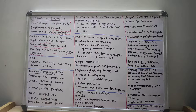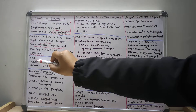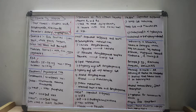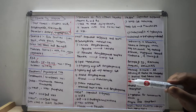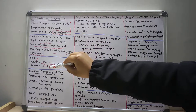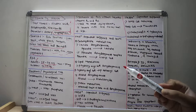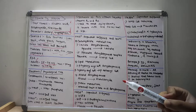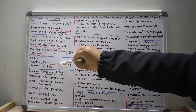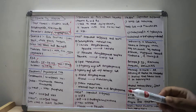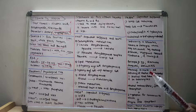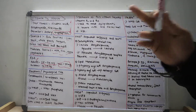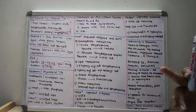The daily recommended allowance of vitamin B3 is 15 to 29 mg in adults and 10 to 15 mg in children. The maximum vitamin B3 we can take is 35 mg per day. Beyond 35 mg there could be excess of vitamin B3, though it is a water-soluble vitamin.